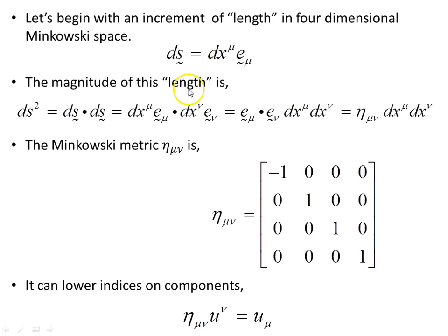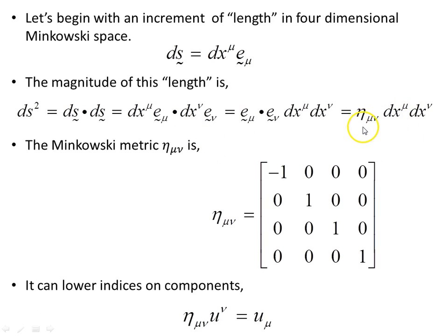The magnitude of this vector — the length, that is — is ds squared. It is the vector element dotted with itself, the scalar product. Carrying out the scalar product, we take out the two basis vectors and put them together, giving us eta_mu_nu dx^mu dx^nu. Eta_mu_nu is the Minkowski metric, or Minkowski tensor, and it can be used to lower components on vector elements or other objects.